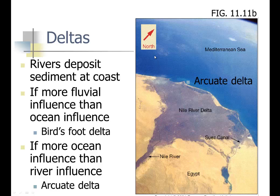Deltas form at a river carrying lots of sediment — it hits a relatively large continental shelf and deposits the material. This is the Nile River Valley Delta, an arcuate type delta. It has an arch shape in the Mediterranean Sea. River deposits at the coast are fluvial — river influenced, not marine influenced.